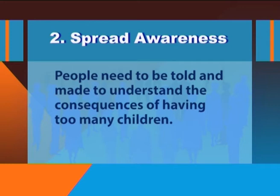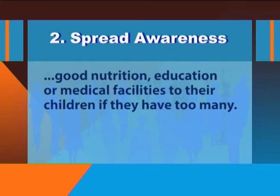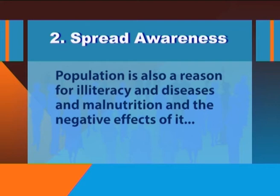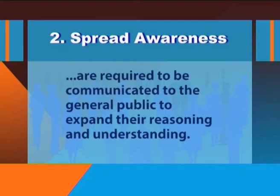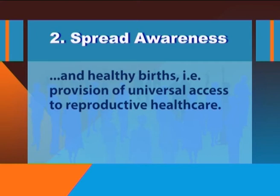Second: spread awareness. People need to be told and made to understand the consequences of having too many children. Government and non-government institutions can carry awareness campaigns informing people how they will be unable to provide good nutrition, education, or medical facilities to their children if they have too many. Population is also a reason for illiteracy, diseases, and malnutrition, and the negative effects need to be communicated to the general public. Governments need to be involved in providing services that allow women to have healthy pregnancies and births — that is, provision of universal access to reproductive health care.